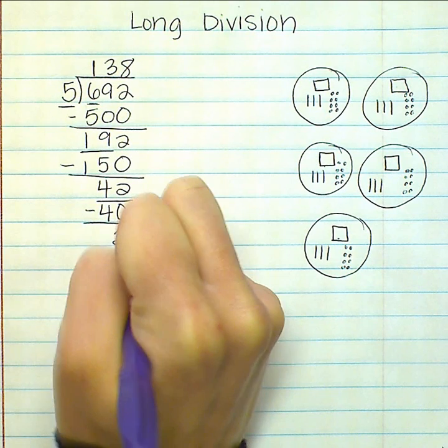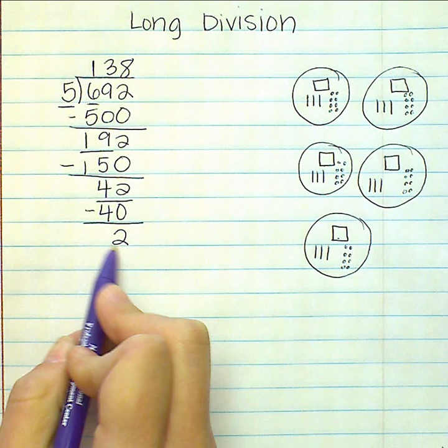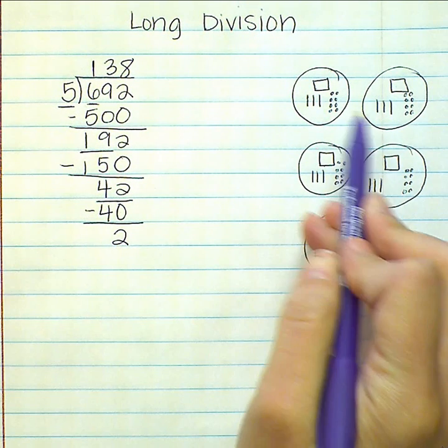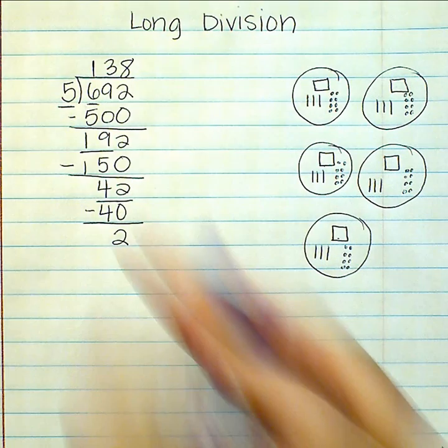I have two left over. So since those two can't go into any of these groups evenly, I have a remainder of two.